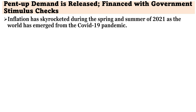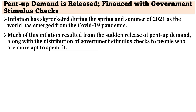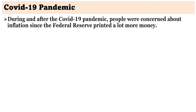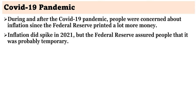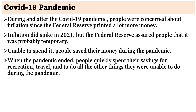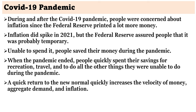Inflation skyrocketed during the spring and summer of 2021 as the world emerged from the COVID-19 pandemic. Much of this inflation resulted from the sudden release of pent-up demand, along with the distribution of government stimulus checks to people who are more apt to spend it. Distributing several trillion dollars to the non-wealthy is a good way to ignite inflation — of course, they needed it. During and after the COVID-19 pandemic, the Federal Reserve printed a lot more money, and inflation did spike in 2021, though the Federal Reserve assured people it was probably temporary. Unable to spend it, people saved their money during the pandemic. When the pandemic ended, people quickly spent their savings on recreation, travel, and all the other things they were unable to do. A quick return to the new normal quickly increases aggregate demand and inflation.